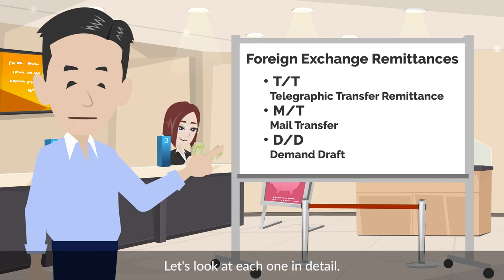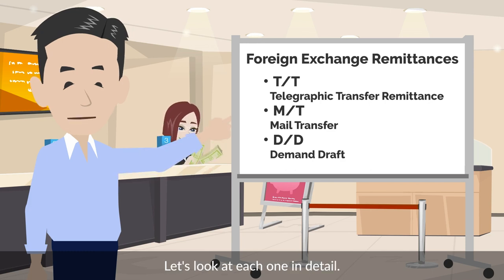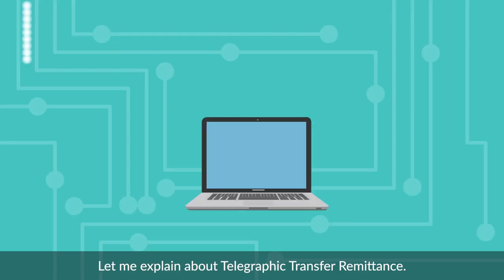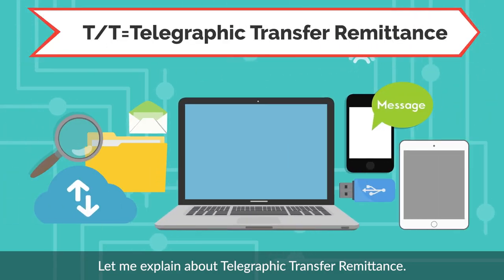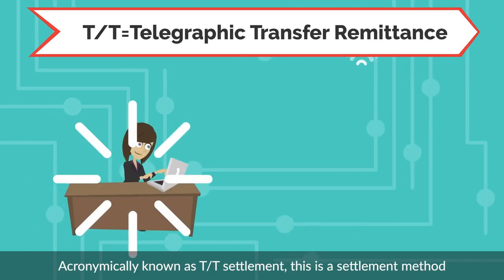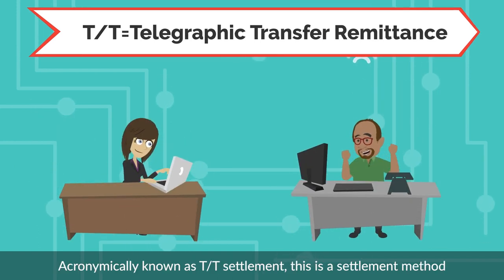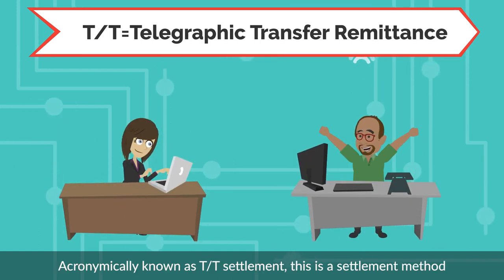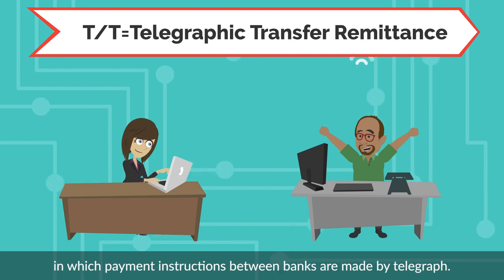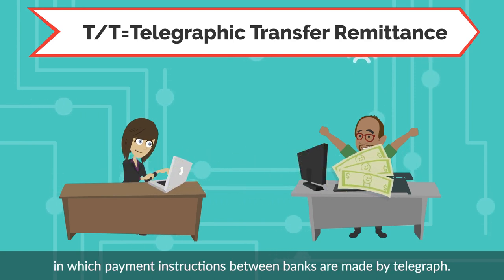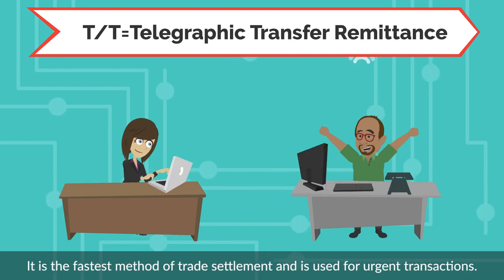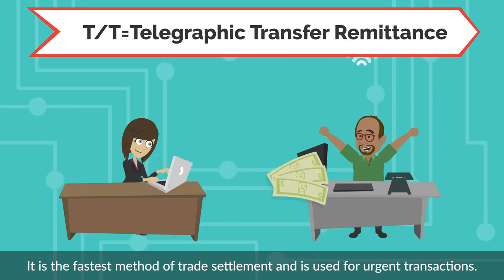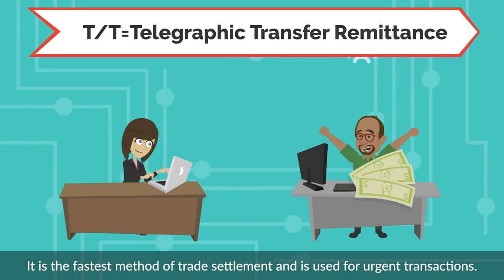Let's look at each one in detail. Telegraphic Transfer, or TT Settlement, is the fastest method of trade settlement and is used for urgent transactions.